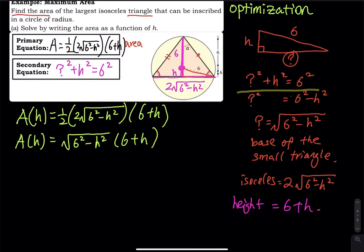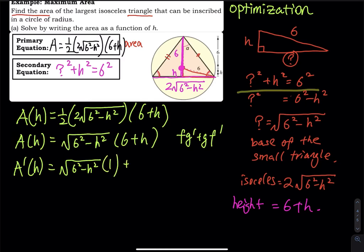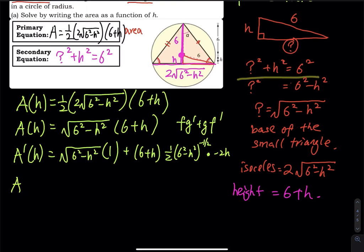We take the derivative using the product rule: FG prime plus GF prime. A prime of H equals the square root of six squared minus H squared times one, plus six plus H times one half times six squared minus H squared to the negative one half, times negative two H by the chain rule.